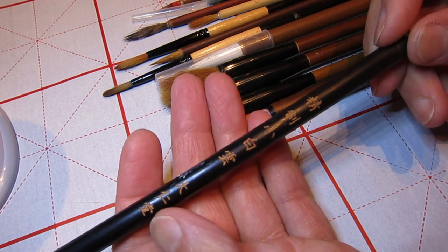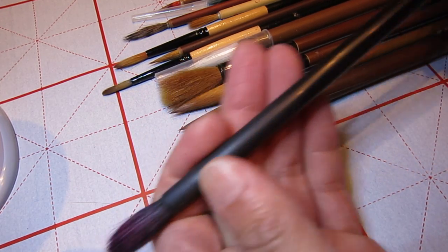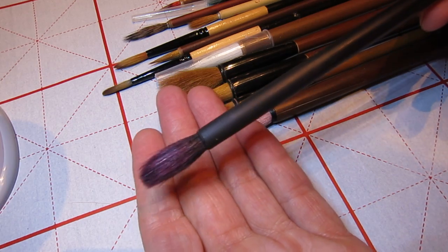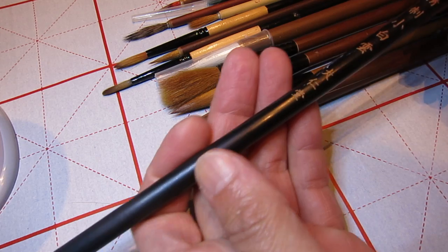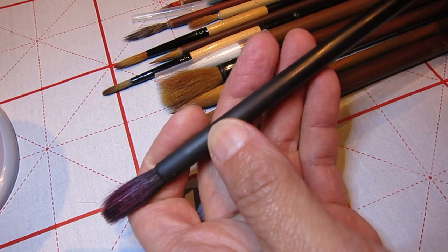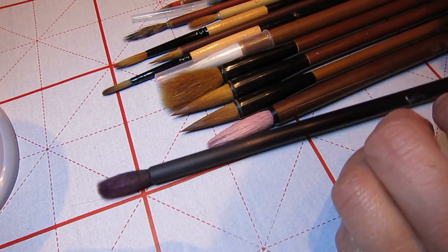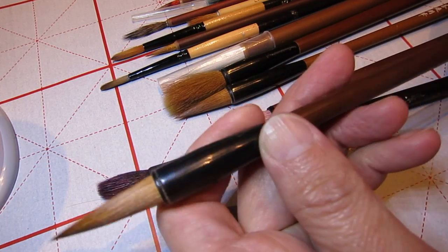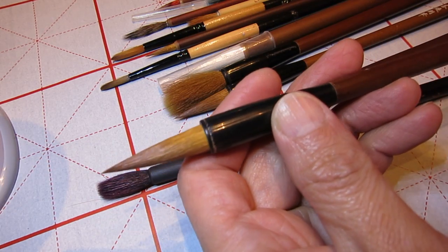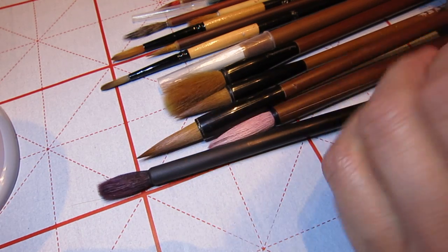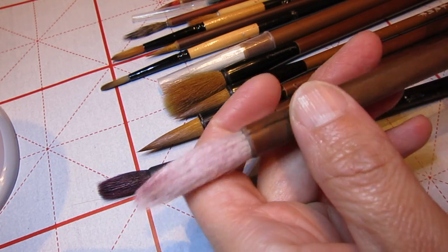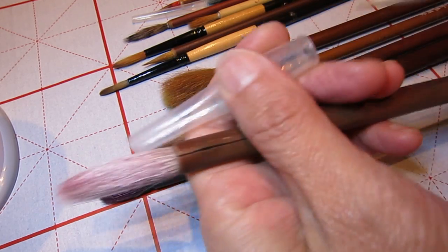So this is the brush I used for bamboo painting. I think a lot of friends wanted to have this one. It's nothing special, it's just a very common small white cloud. And this is the medium size orchid bamboo. And this is a large size white cloud.